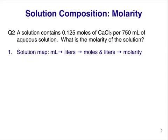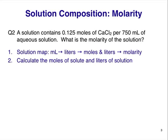Our first step is to pull out the information we need from the question and to write a solution map. We will need moles of solute and liters of solution. We have moles of solute from the question, so clearly we need to convert milliliters into liters before we can proceed. Once we have liters of solution, we can use it with the moles of solute to calculate molarity. In this question we have 0.125 moles of solute and 0.750 liters of solution.